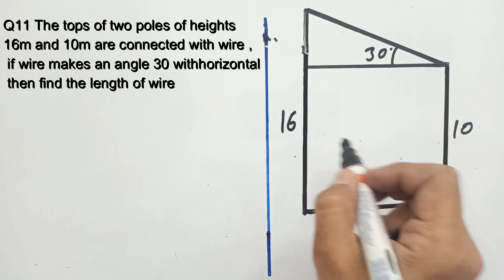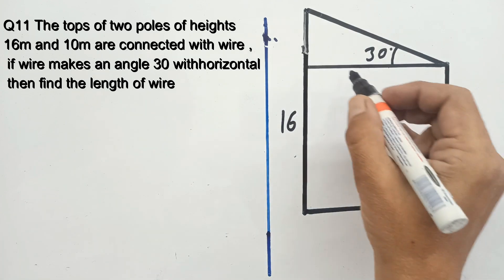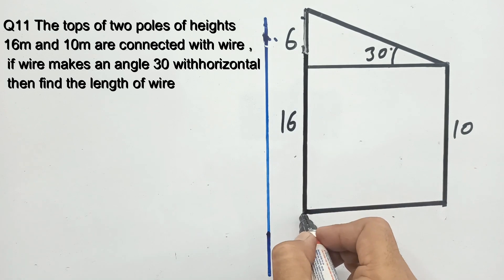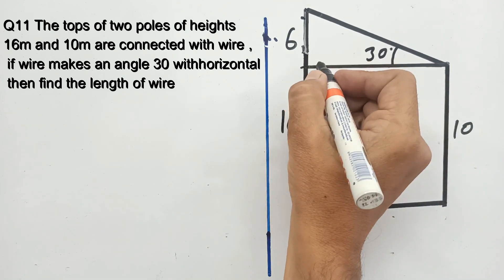Very simple. See geometrically, this is 16, this is 10, so this portion will be 6 meters because 16 total minus 10, this portion is 6.